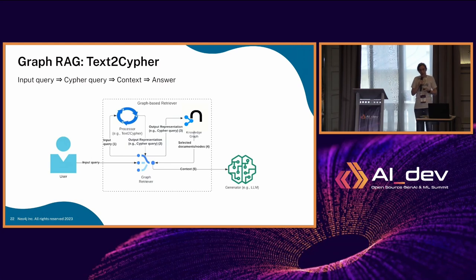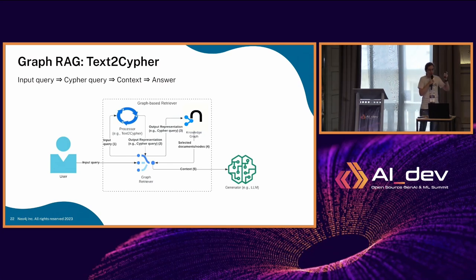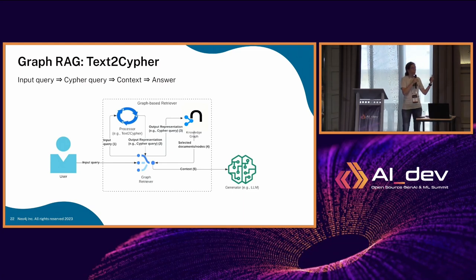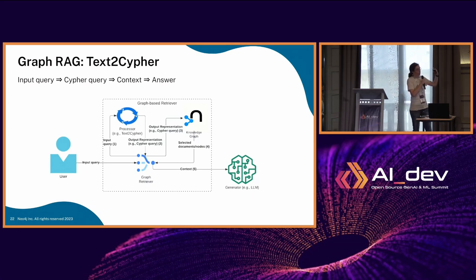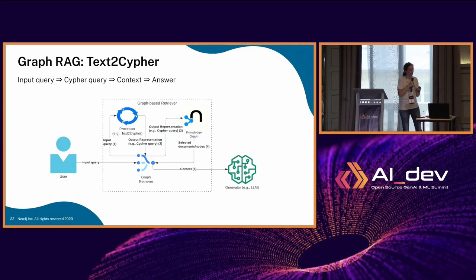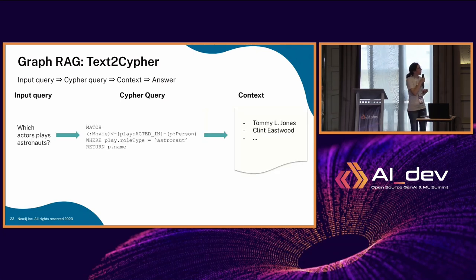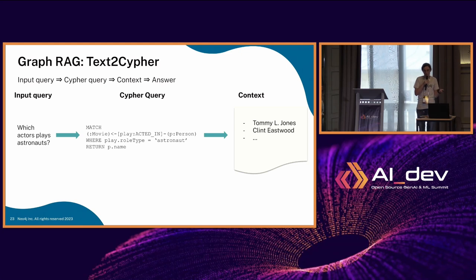The last solution is text-to-Cypher. In this case, there is an intermediate step that also relies on an LLM — you take the question, provide your graph schema (the types of nodes and relationships), and ask the LLM to generate the query that will answer the question. Then you execute that query and provide the results to the LLM to write the answer. For example, the question 'which actors play astronauts' is converted into a specific Cypher query, and the context contains only the actors whose role type was astronaut.